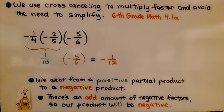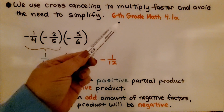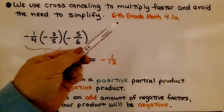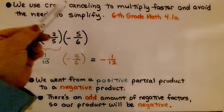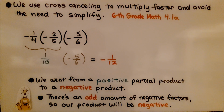For those of you who have been watching my videos for more than a year, you remember from sixth grade math — it was lesson 4.1a — we learned about cross-canceling. We can use cross-canceling to multiply faster and avoid the need to simplify.